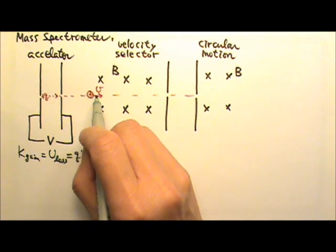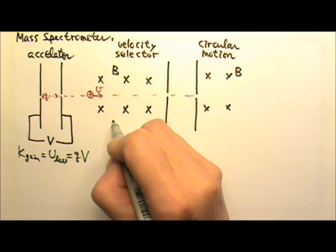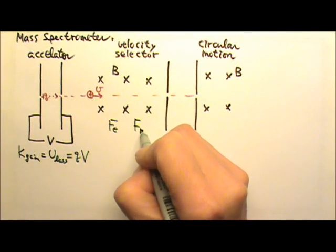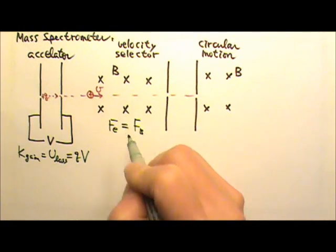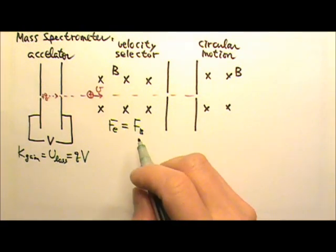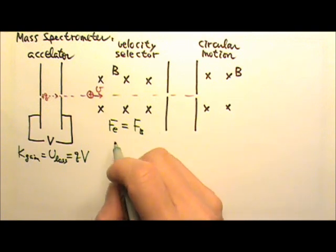The reason why the particle can go undeflected is because the electric force and the magnetic force acting on the particle must be equal and opposite. So they can cancel, and that's why the particle goes straight undeflected.